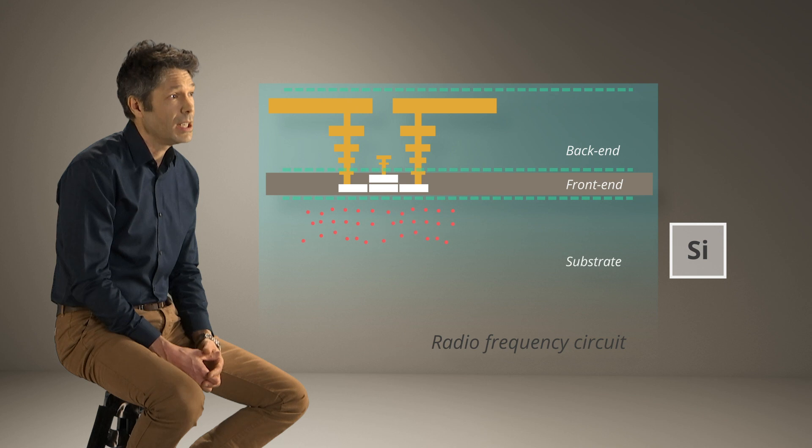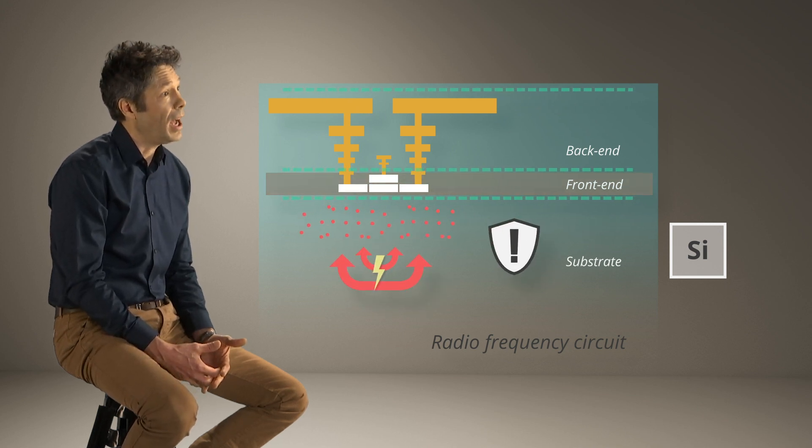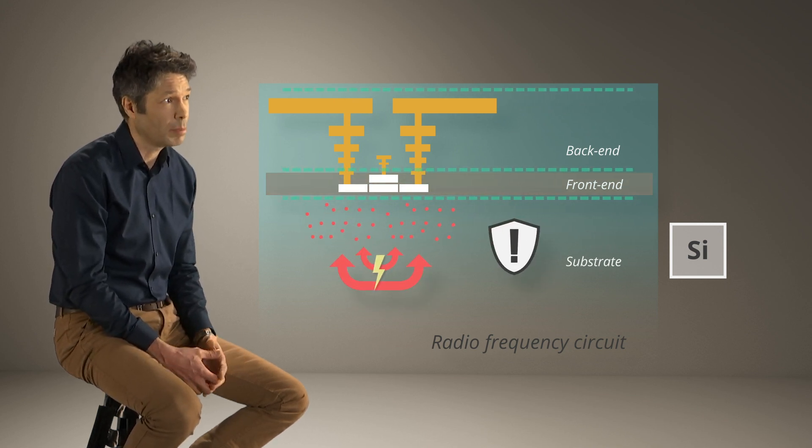Silicon is a material of interest because it's the most abundant element on earth after oxygen. But one of the problems with silicon is really its poor RF, poor electromagnetic properties.